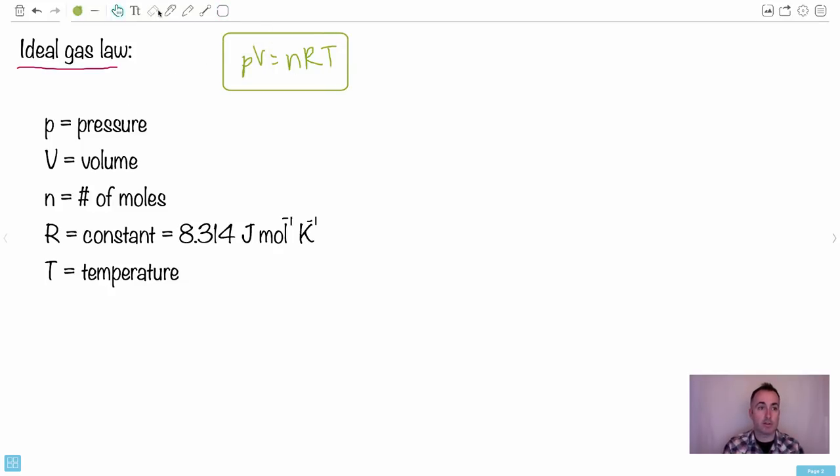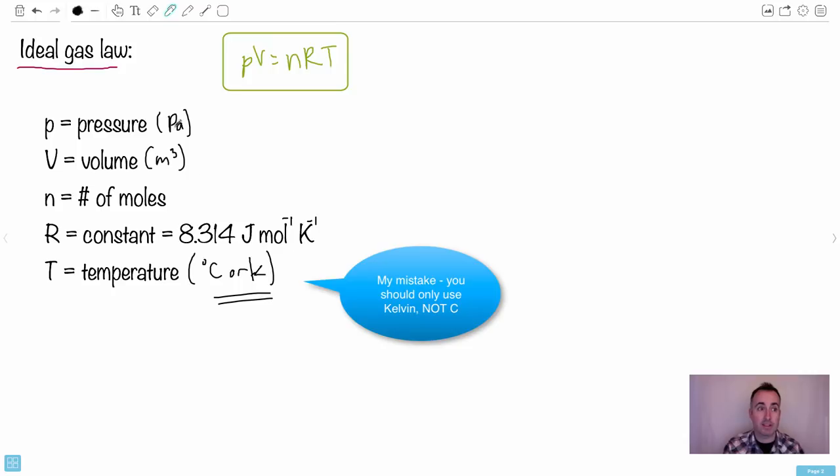First we'll talk about each of the different players in here. P is pressure in Pascals. Volume is length times width times height, so that's in meters cubed. N is the number of moles, which relates to the amount of material you have. R is just a constant, 8.314. You don't have to memorize it, you can look it up. And finally you have temperature, which can be measured in degrees Celsius or Kelvin. That's all you need. This is the ideal gas law.